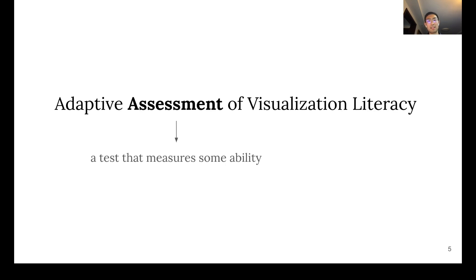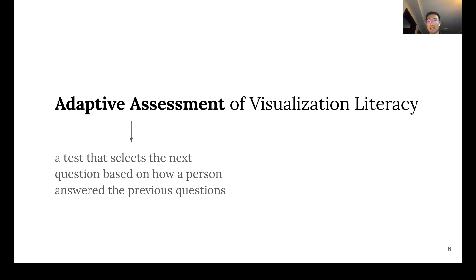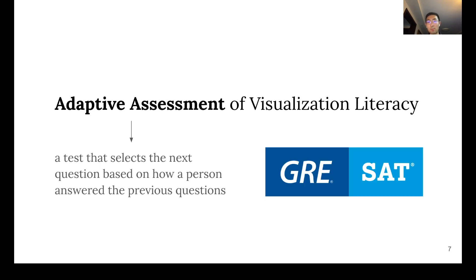An assessment is a test that measures some ability, and an adaptive assessment is a test that picks the next question based on how someone answered the previous questions. For example, many popular standardized tests are adaptive, such as the GRE, and the SAT, the college admissions test in the US, is also in the process of becoming adaptive.